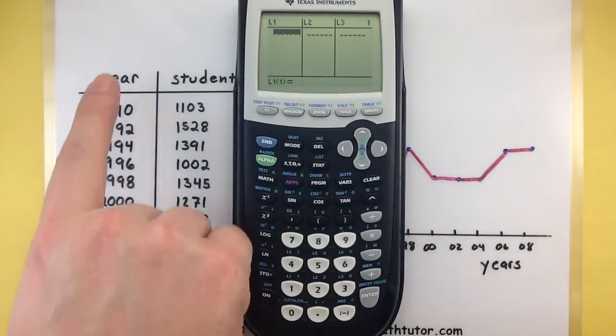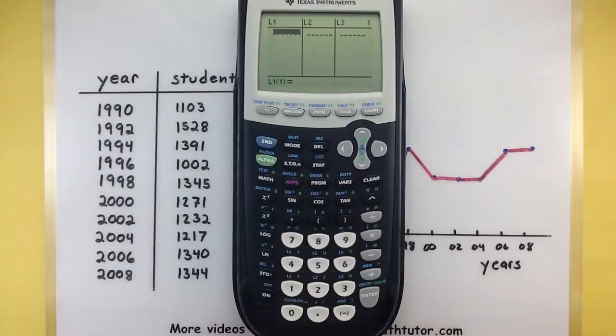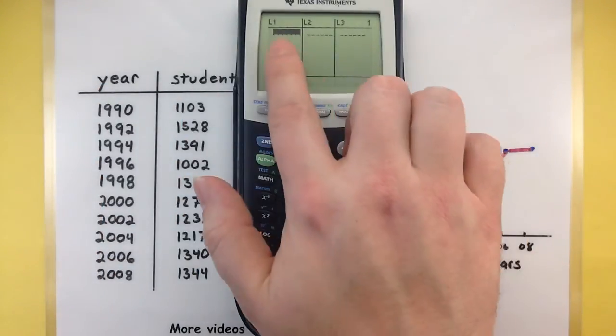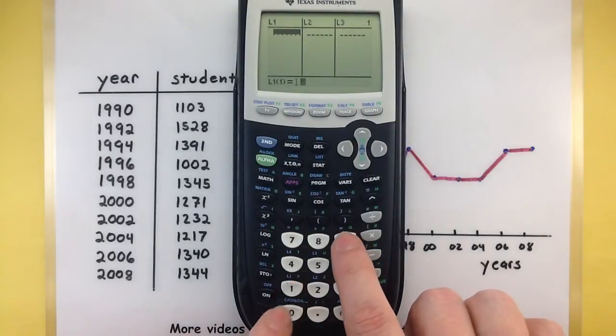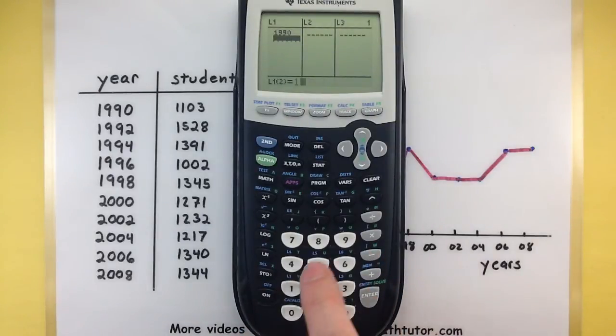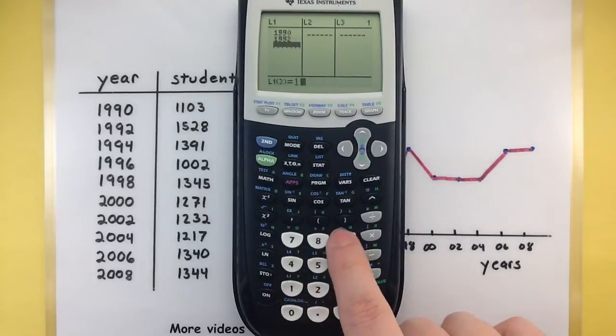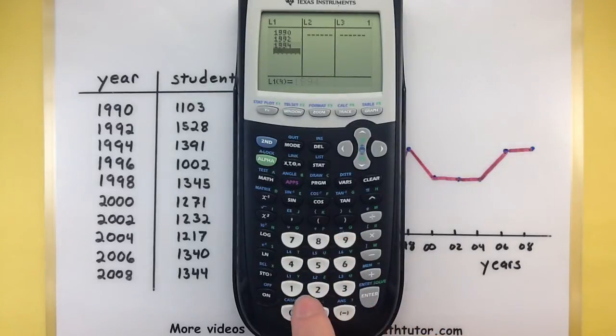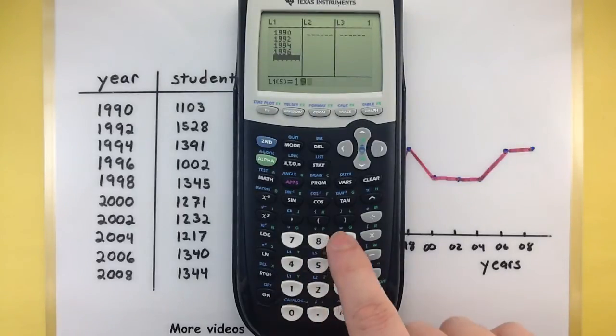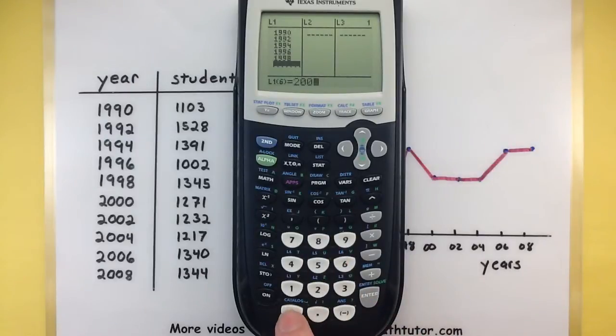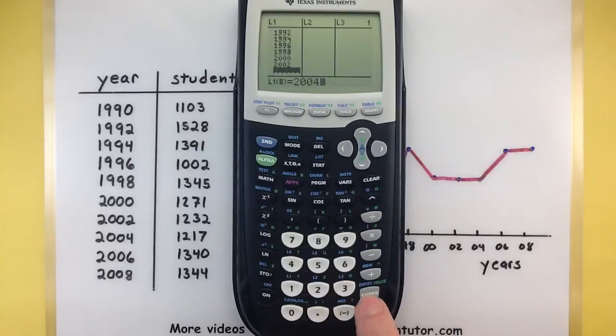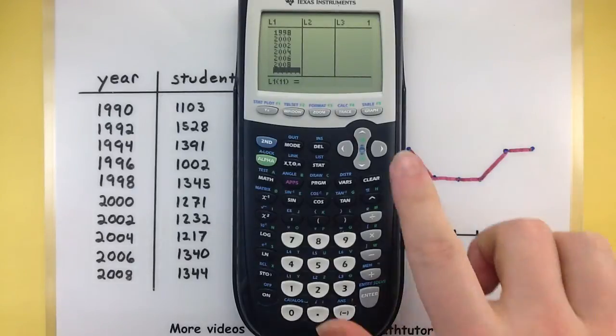We're going to be putting in the year under list one and students under list two. List one is selected. Let's go ahead and enter in our years one at a time: 1990, 1992... All right great, looks like I have all of my years.